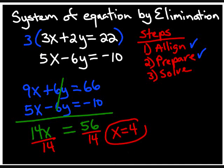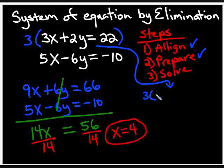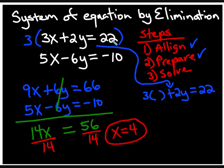How do we find the other solution? To get the last solution, we grab one of the original equations. I'll use the first original equation without the multiplication by three. So I write 3x plus 2y is equal to 22. I left a blank for x — do I put the value of x or the variable? Since we already know what the value is, we input it. We place 4 there, because we know that x is equal to 4.